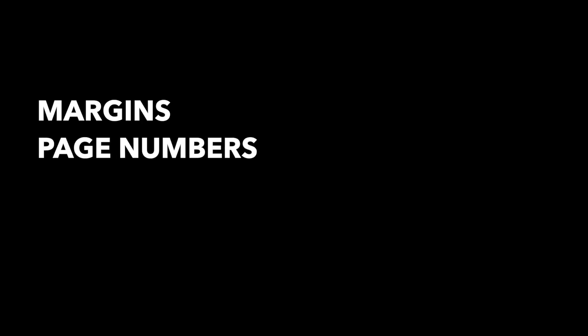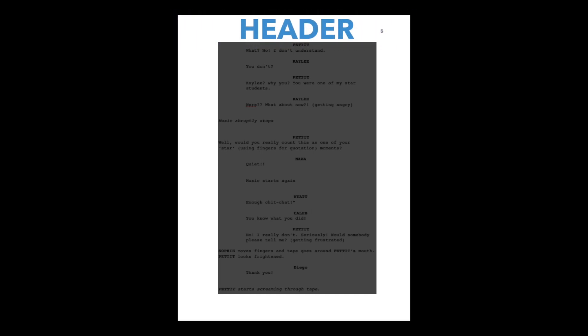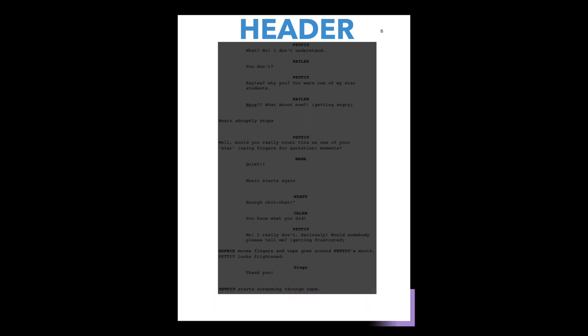Page numbers. Inside the margin, you can put additional text if you need to. If you put something in the top margin, it's called a header. If you put something in the bottom margin, it's called a footer. Headers and footers are interesting because whatever you put there will show up on every page of your document. We are going to put page numbers in the header. This way, the page number will show up on every page of your document.